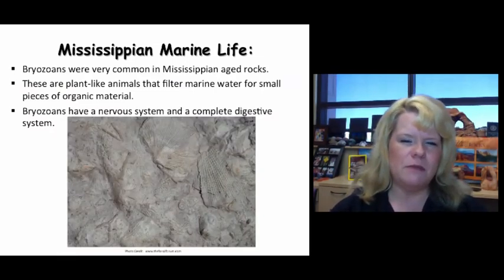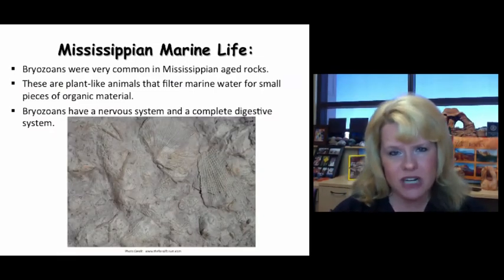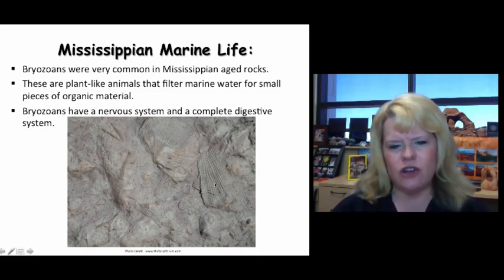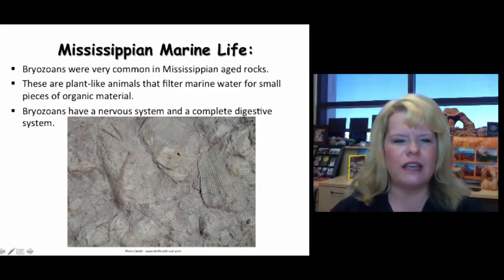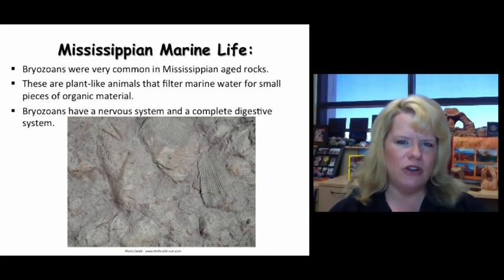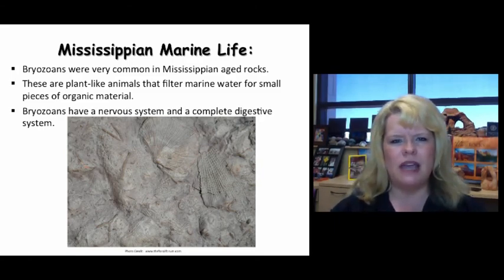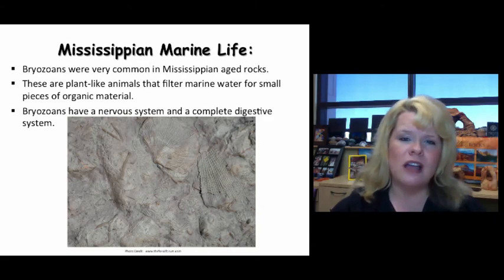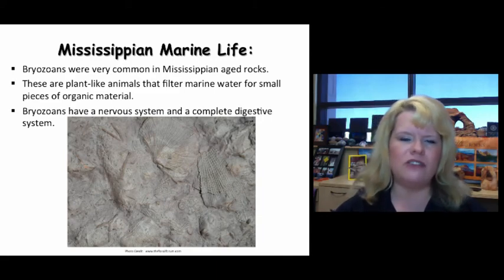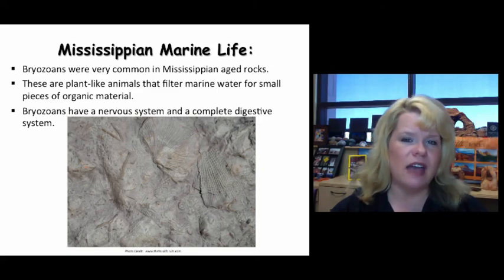When we think about Mississippian marine life, bryozoans need to come to mind. These are branching and lacy fenestrate bryozoans. Bryozoans are kind of like plant animals — they're called sea mosses and they are filter feeders. What makes them so special is they actually encrust on rock and anchor in that rock, so it leaves a pretty good rock record behind.